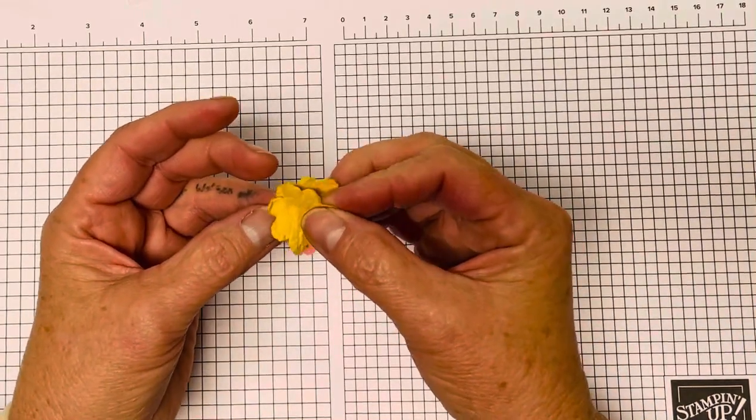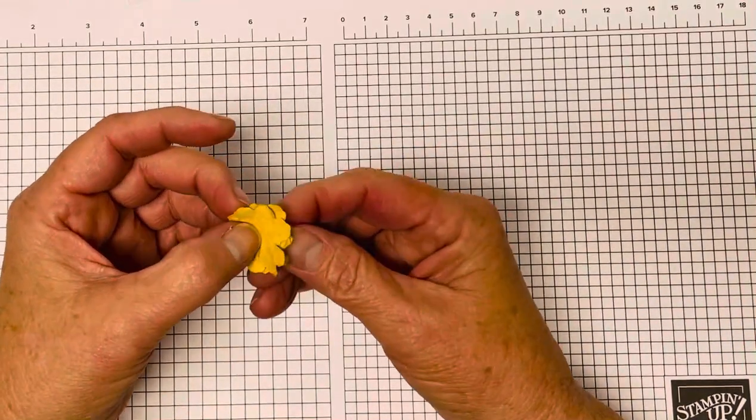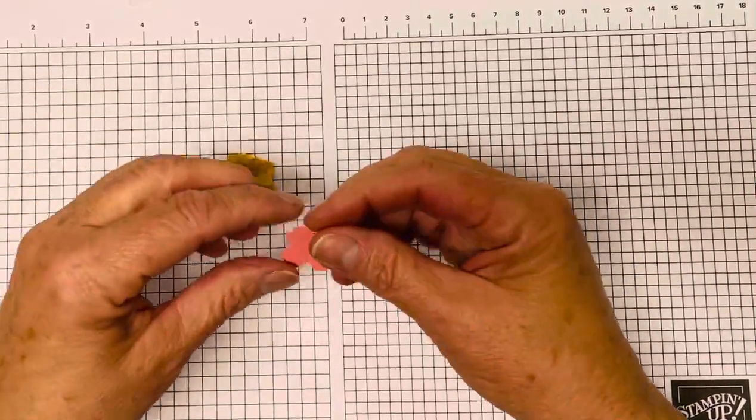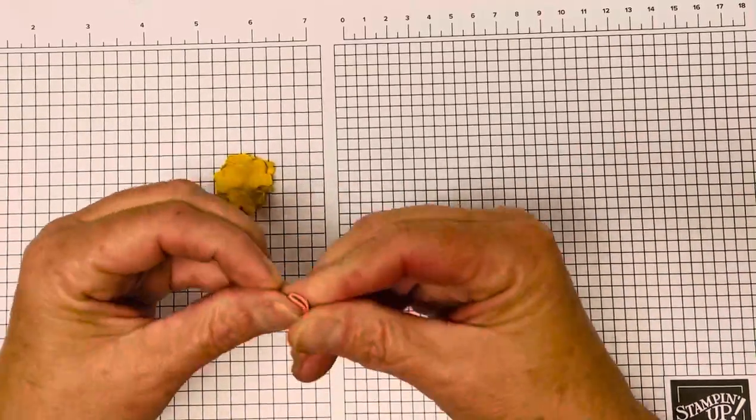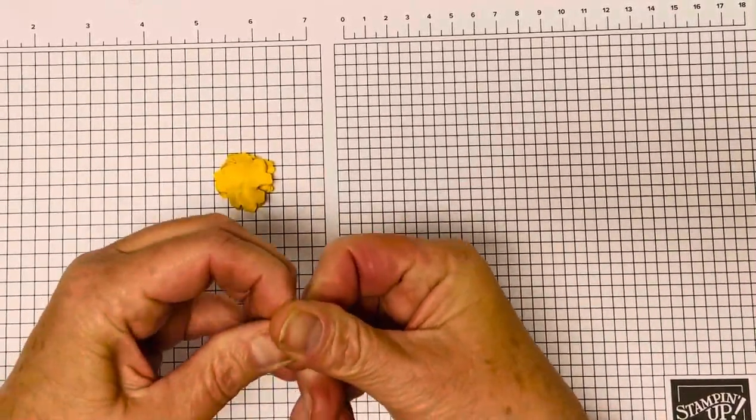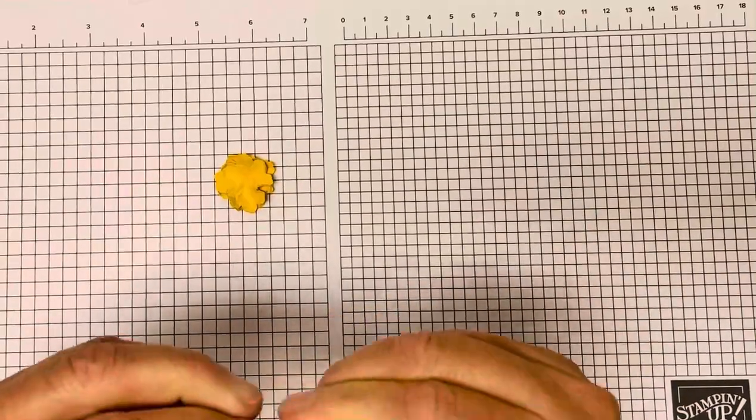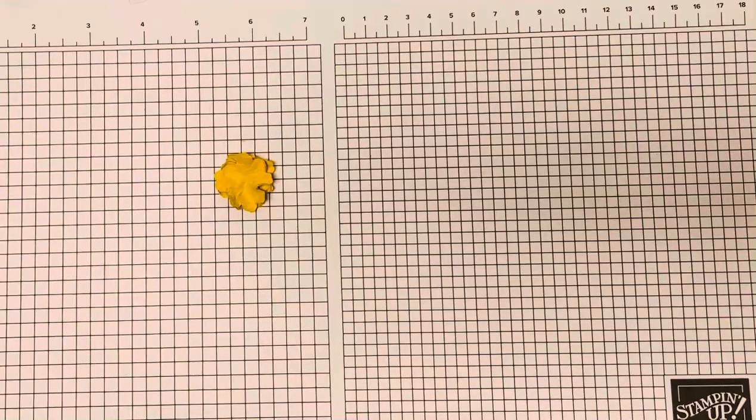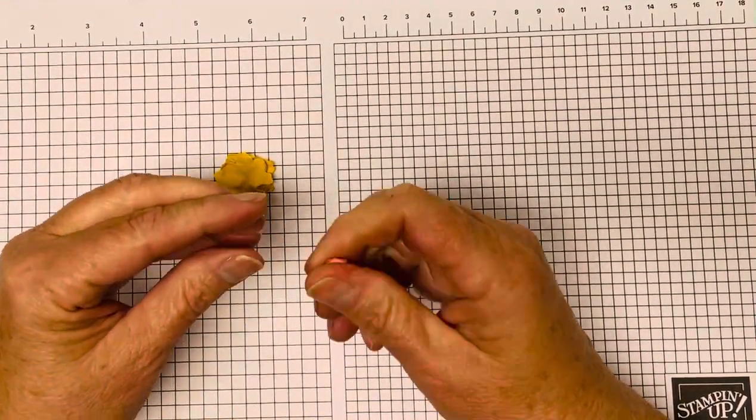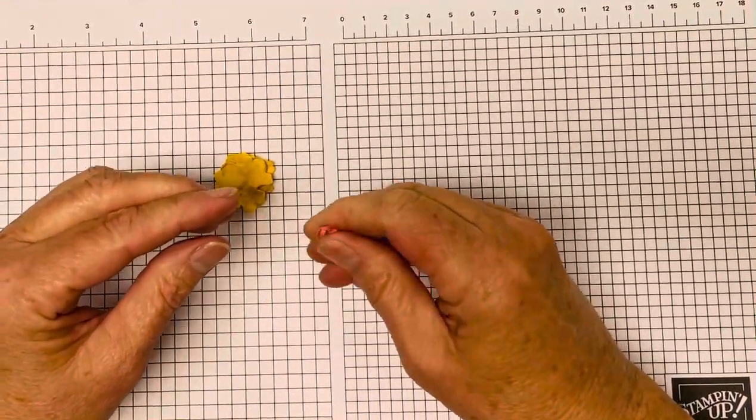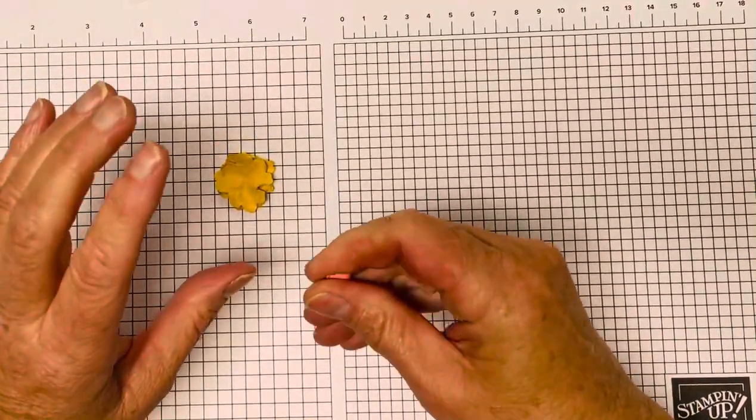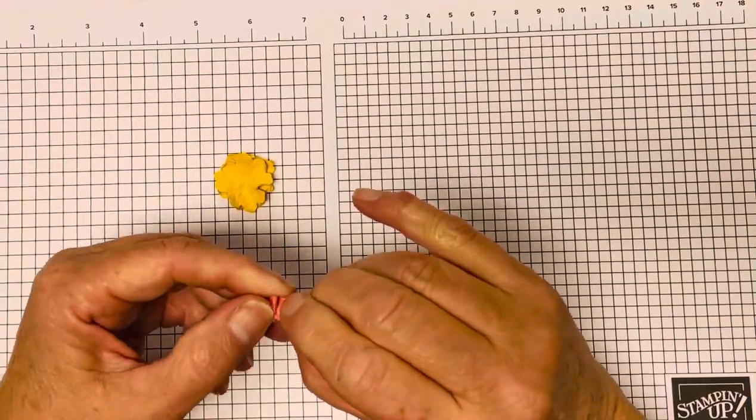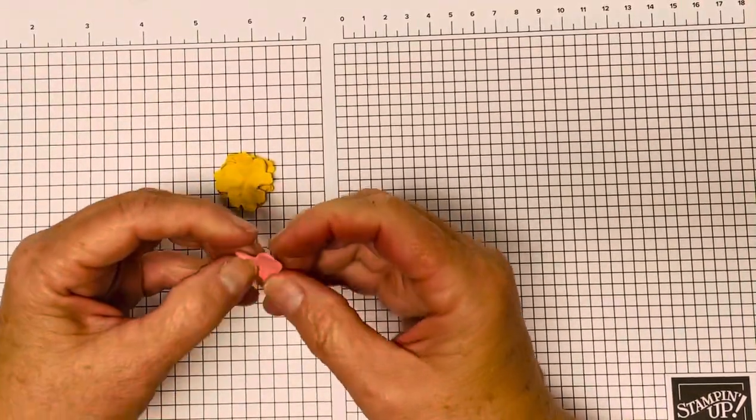These are great for treat boxes, for cards. And let me show you the Flirty Flamingo one. You can use them for anything. I haven't tried it yet, but some of the new Christmas sets have Christmas tree dies. And I think it'd be really cute to do with that. So that's on my list of things to do, which is getting longer and longer every day. I haven't been home for several days.